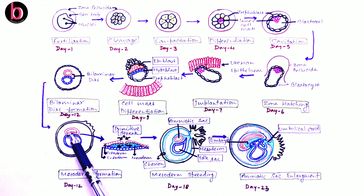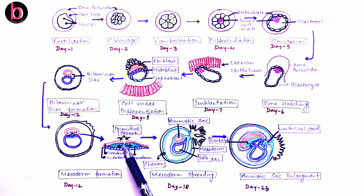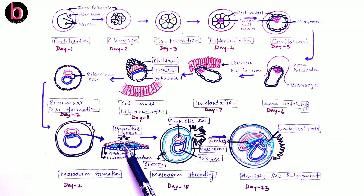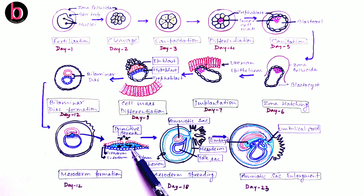Later, the epiblast starts to invaginate — epiblast cells fold inward toward the hypoblast. There is a narrow tube-like structure formed; the entry point of this tube is known as the primitive streak. Formation of the primitive streak is the initiation of gastrulation, which is responsible for formation of three embryonic layers: the outer ectoderm, the middle mesoderm, and the inner endoderm.